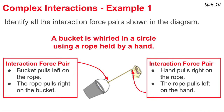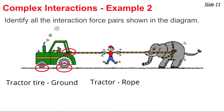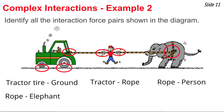This is our second example of a complex interaction, with several objects: the ground, a tractor, a couple of ropes, a person, and an elephant. Beginning on the left side of the diagram, the tractor tires and ground are interacting — the tractor tires push backwards on the ground and the ground pushes forward on the tractor. Then the tractor and the rope are interacting, giving a pair of forces there. Next, the person is holding ropes with both hands, giving two interaction force pairs with the left hand and right hand. Then the rope and the elephant have an interaction force pair — a force on the elephant and a force on the rope. Finally, the elephant's feet and the ground are interacting, giving a whole host of interaction force pairs in this complex situation.